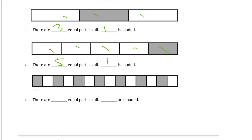And here we have one, two, three, four, five, six, seven, eight, nine, ten, eleven, twelve, thirteen, fourteen equal parts in all. And probably seven — looks like every other one. One, two, three, four, five, six, seven of them are shaded.